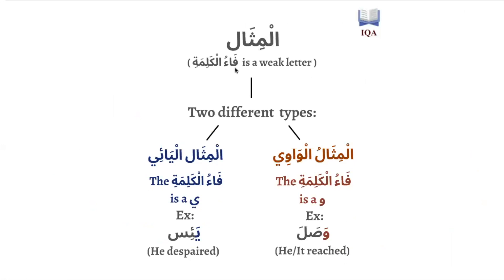So al-mithal: the fa-kalima is a weak letter. These types of verbs are of two different types — there's mithal al-ya'i and there's mithal al-wawi. Mithal al-ya'i is if the fa-kalima is a ya, like ya'isa, which means 'he despaired.' In ya'isa, the fa-kalima — the first letter in the verb — is a ya, so it's called mithal al-ya'i because the fa-kalima has a ya specifically.